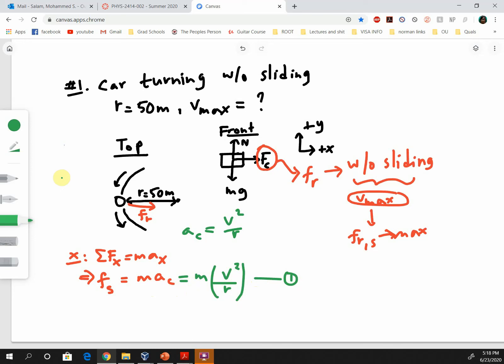What do we have in the y direction? The summation of forces in the y direction equals m times ay. However, the car is not jumping up and down, so acceleration in the y direction is zero. That means the two forces in the y direction, the normal force and the weight, are balanced. So we can say that N equals mg. Let's call this equation 2.